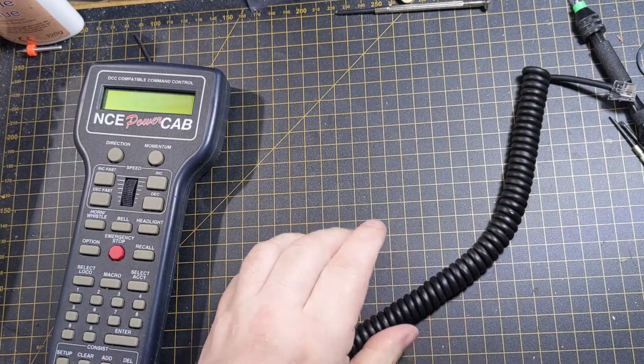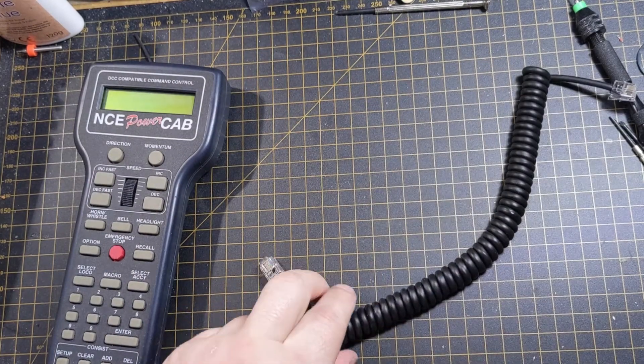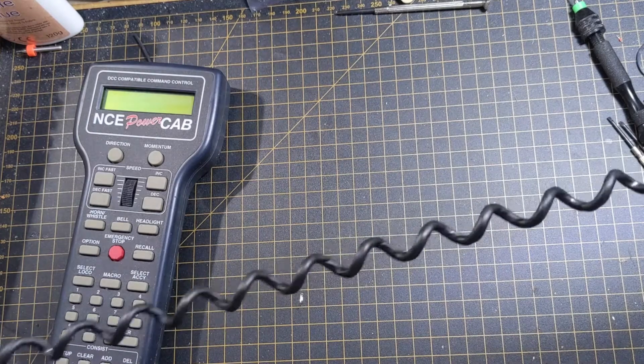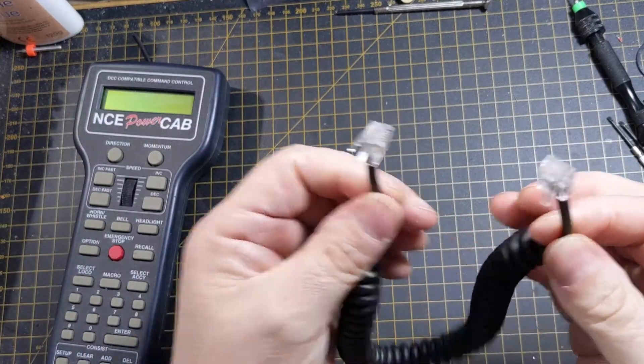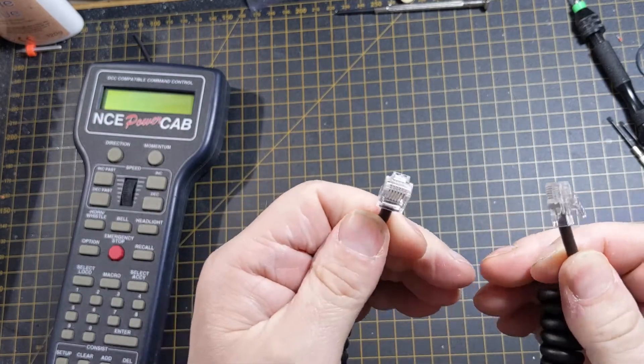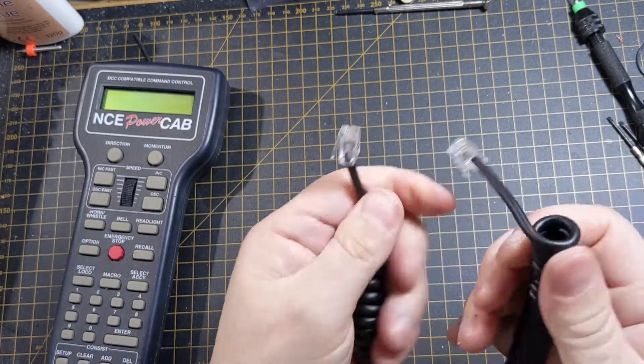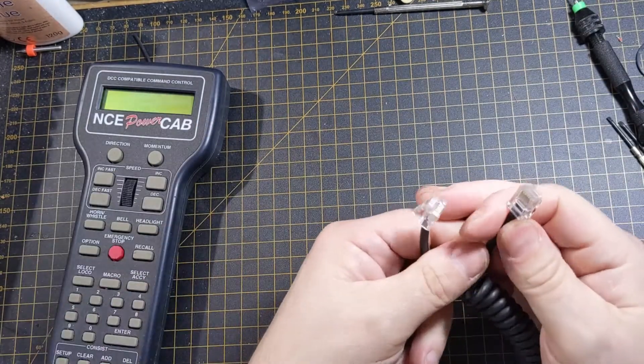Now it doesn't look that long, but of course the advantage of a curly cable is it is stretchy. But also when you don't need it to be stretched out, it's in a nice small compact form rather than sort of dangling out everywhere.